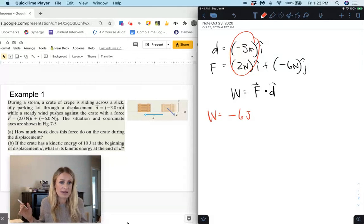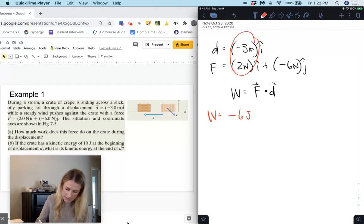But this is our answer for letter A. How much work does this force do on the crate during the displacement? So there is our answer for letter A, just negative 6 joules.